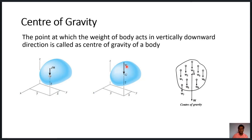We can say that W is the total weight of the body. We assume that this total weight of the body is concentrated at a single point of the body. This point is called the center of gravity of the body.